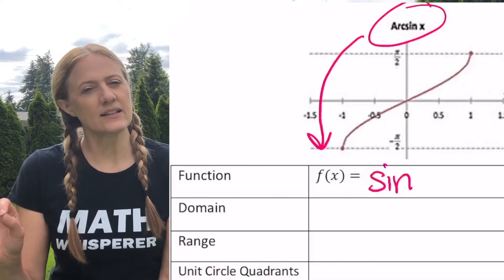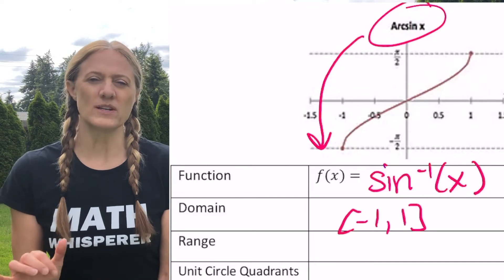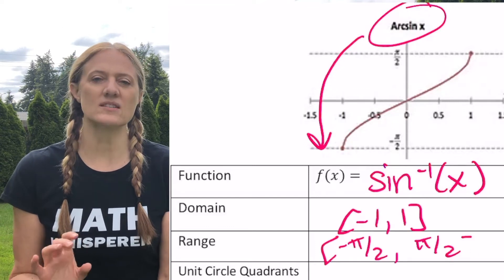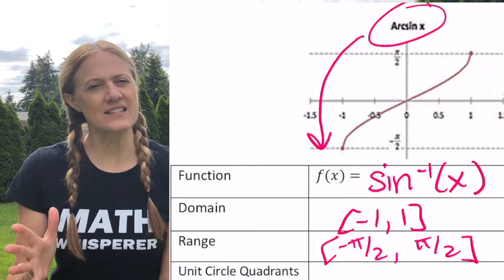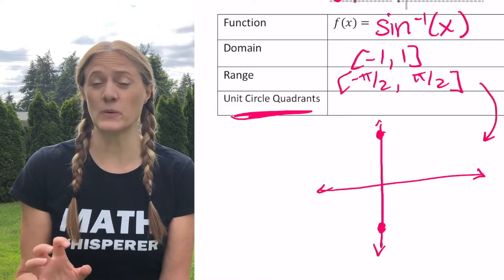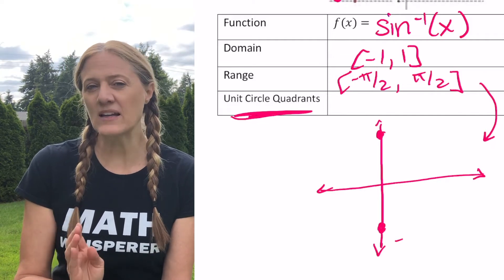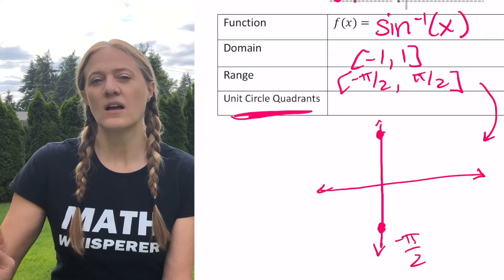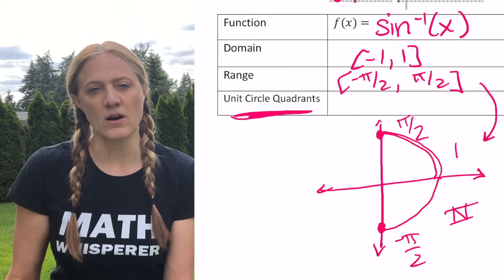Arc sine we already looked at quite extensively. We know the notation: sine to the little negative 1, x. We know that the domain is from negative 1 to 1 inclusive, and the range is negative pi halves to pi halves inclusive. Looking at the unit circle, we want to have a continuous graph going from negative pi halves up to pi halves — so that's quadrant 4 and quadrant 1 for arc sine.